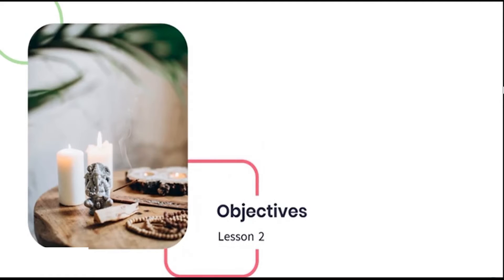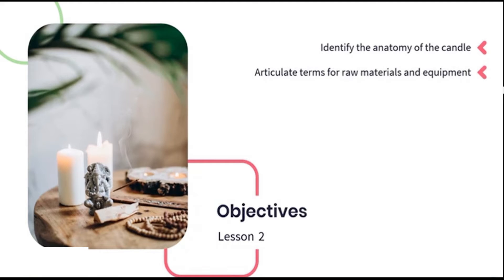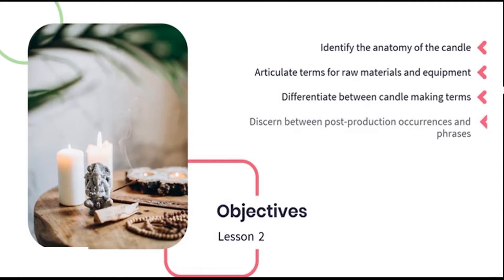During this lesson, we are going to discuss the following objectives: identifying the anatomy of the candle, articulating terms for the raw materials and equipment, differentiating between candle making terms, and discerning between post-production occurrences and phrases.